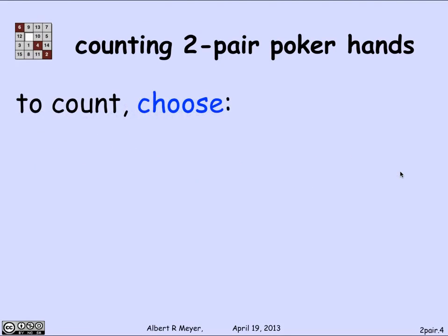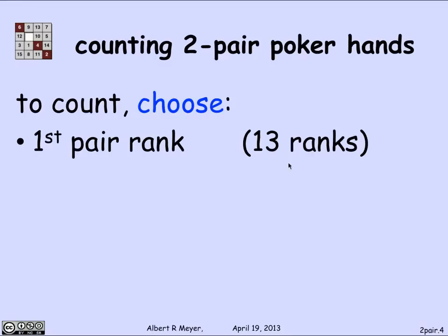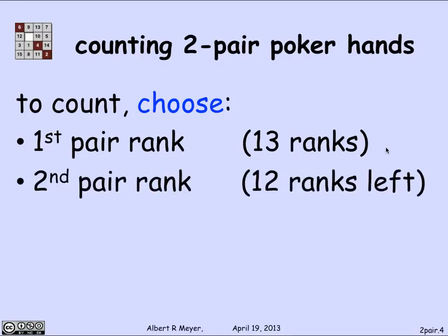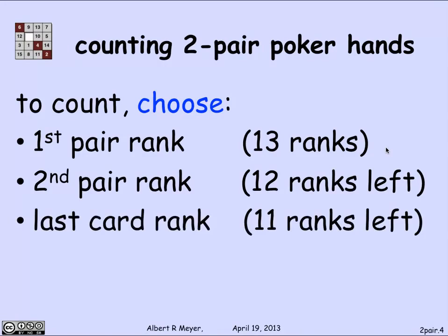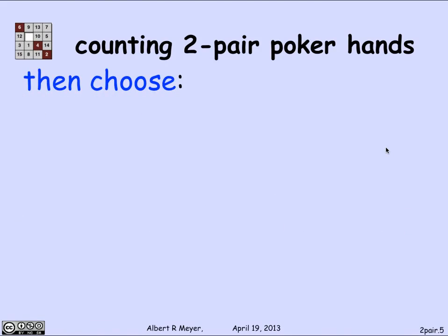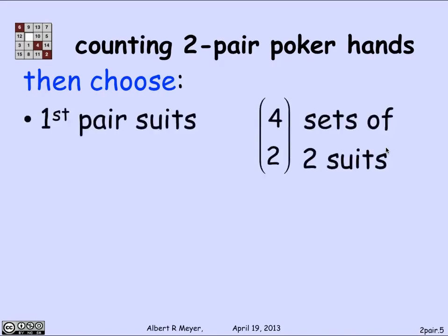To count the number of two-pair hands, I'll choose the rank for the first pair — there are 13 possible ranks. The second pair must have a different rank, so there are 12 ranks left. The last card must be a third rank, giving 11 possible choices. Once I've chosen all three ranks, I select two suits for the first pair: there are four-choose-two ways to do that.